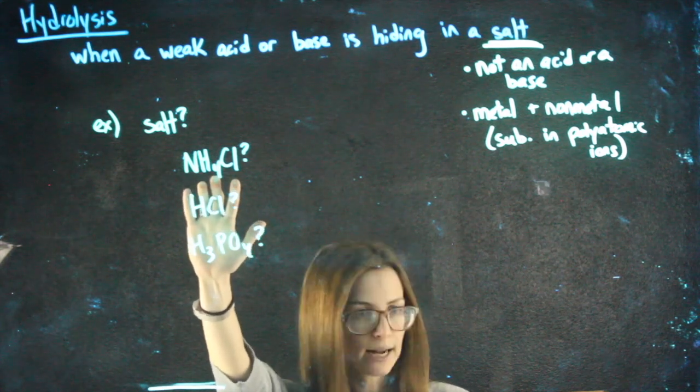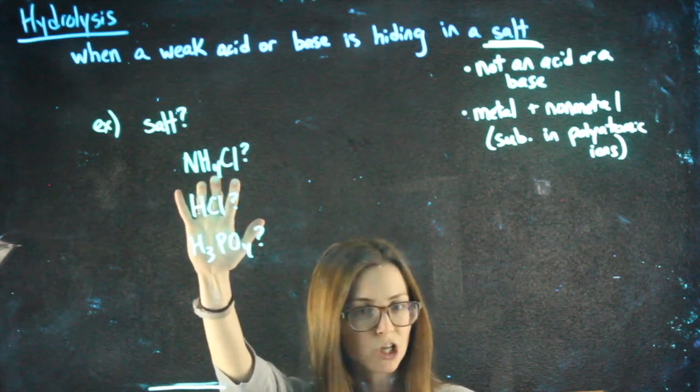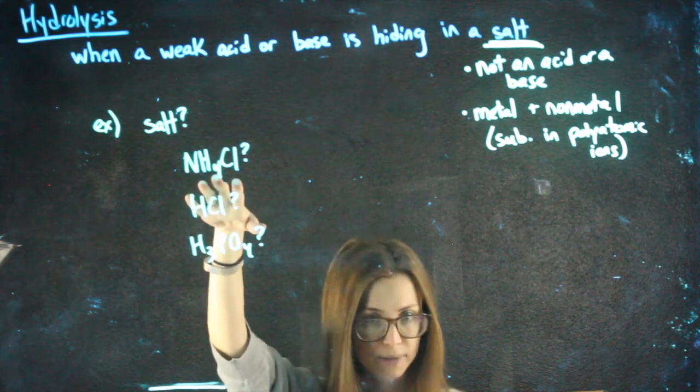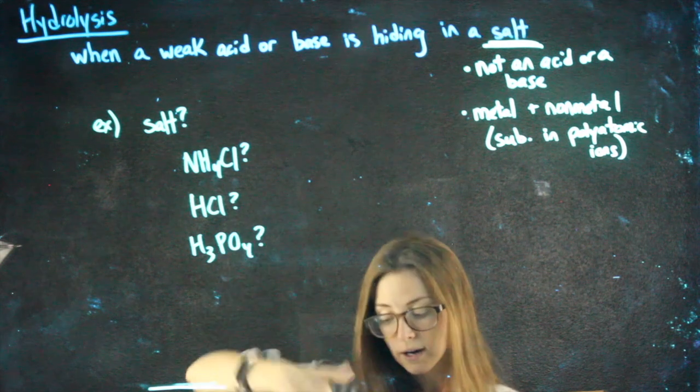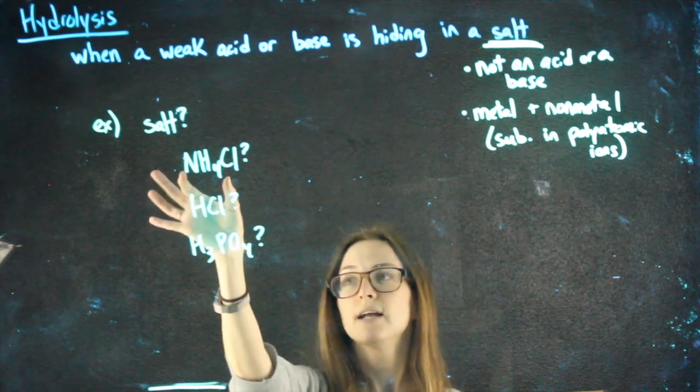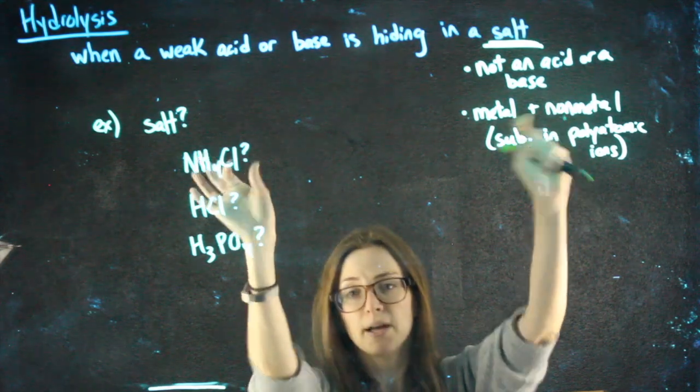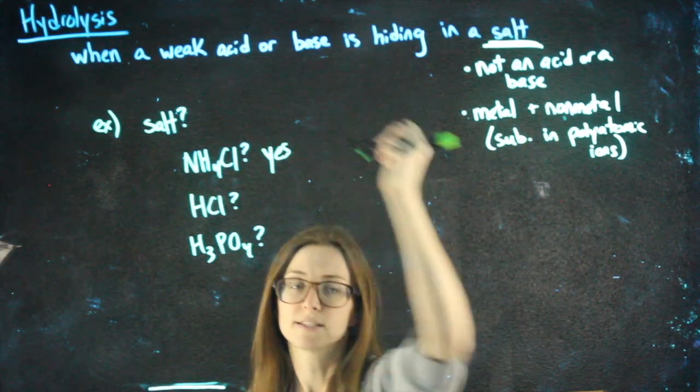NH4Cl, not an acid or a base that I've memorized, so it's not a strong acid or base. You could look on the chart if you wanted. It's not on the Ka Kb chart. Or ideally, you just recognize NH4, that's a polyatomic ion. Cl, that's non-metal. So yes, this is a salt.